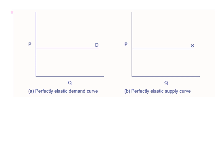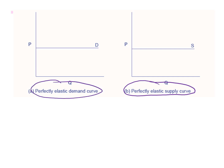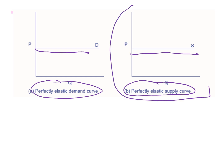Starting with the perfectly elastic supply — and this applies to perfectly elastic demand as well — the key thing to know is that it will always be a horizontal demand or supply curve. Since we are explaining price elasticity of supply, that is my major aim today. When I am talking about infinite elasticity or perfect elasticity, it means I am referring to an extreme case in which the quantity supplied changes by an infinite amount in response to any change in price. In both cases, the supply curve and demand curve are considered to be horizontal.